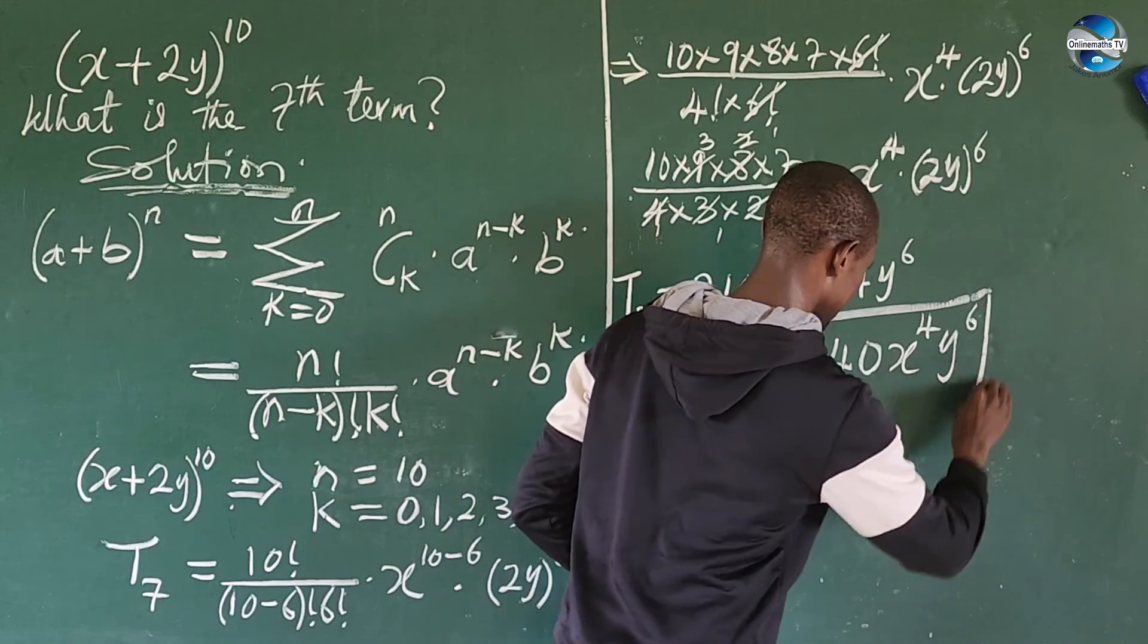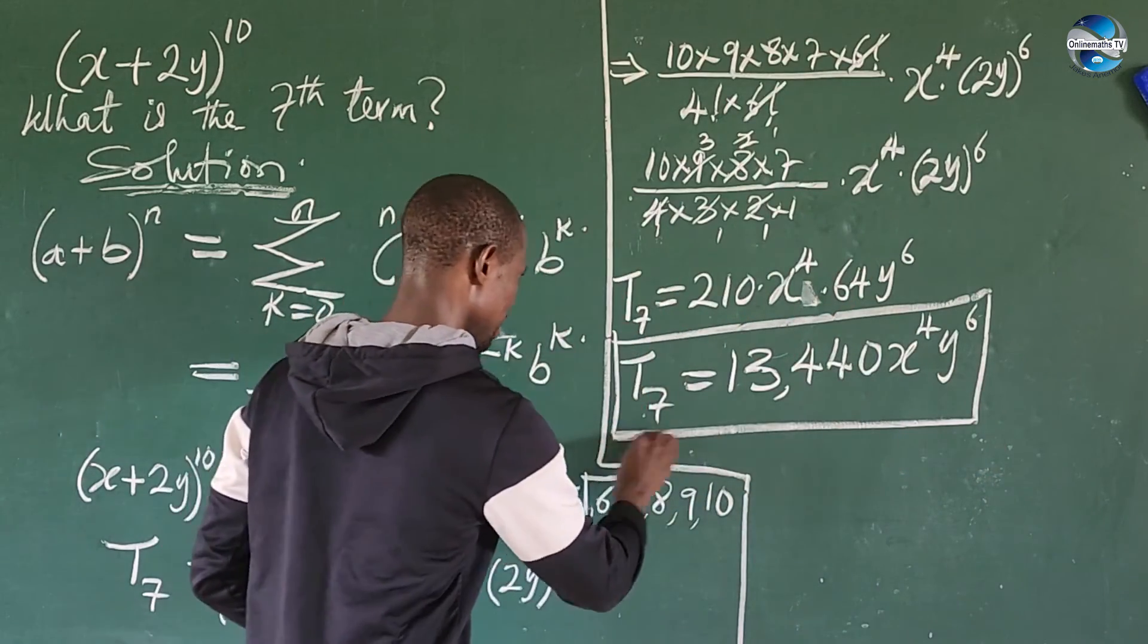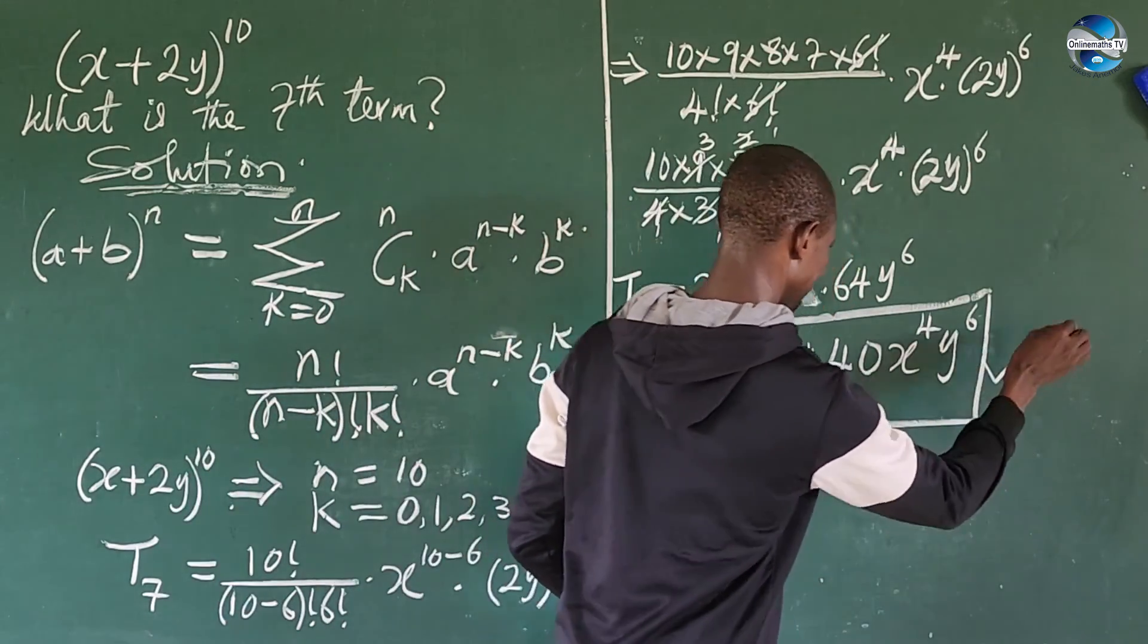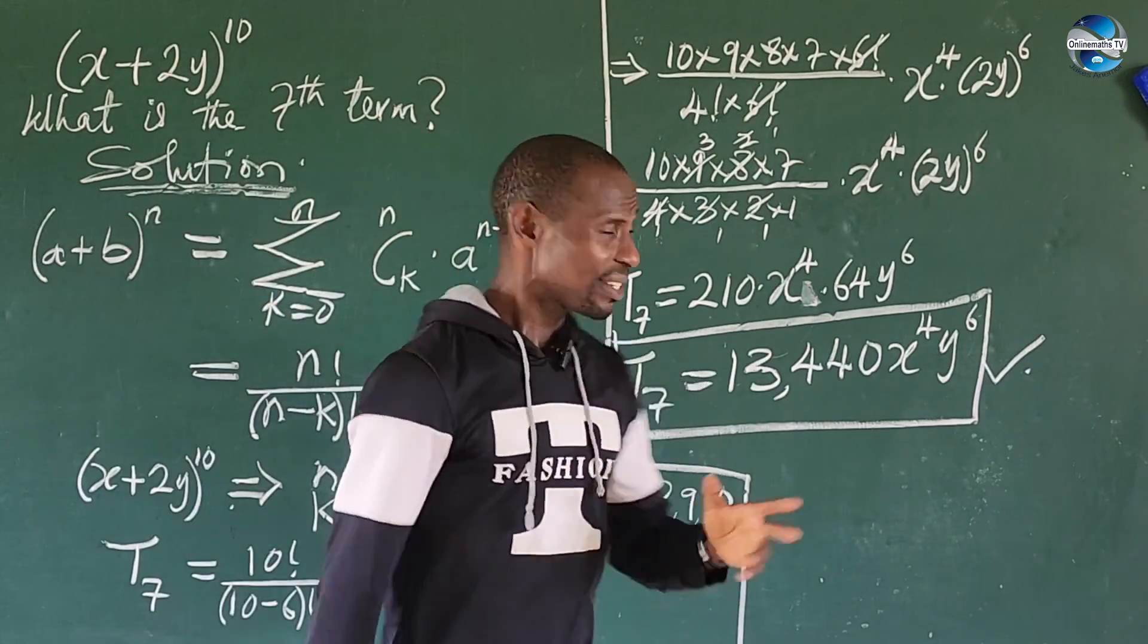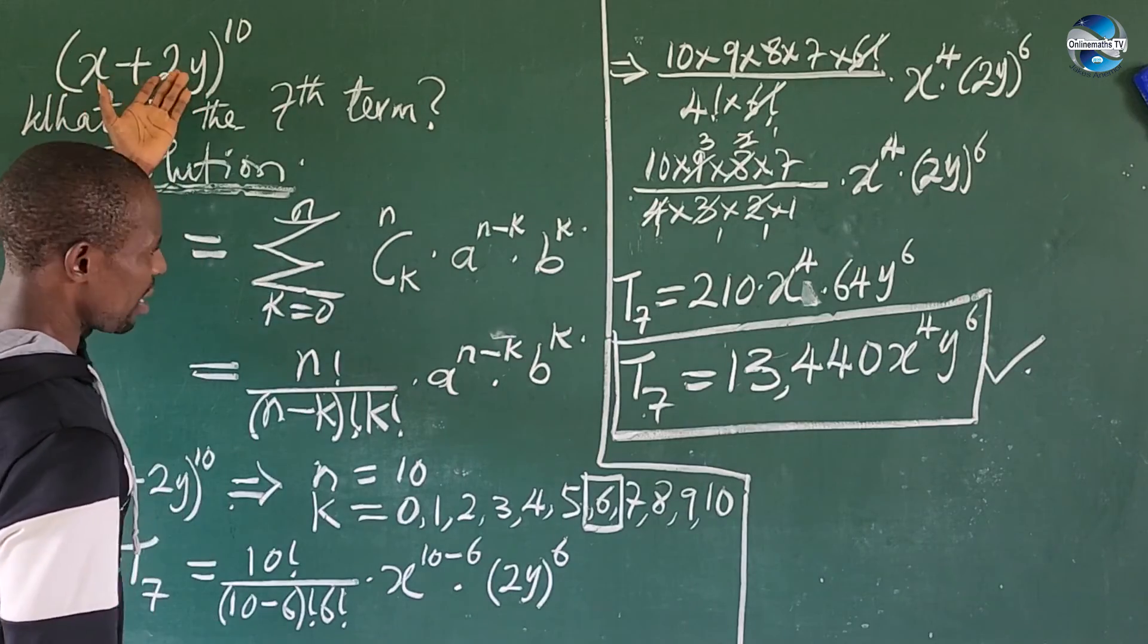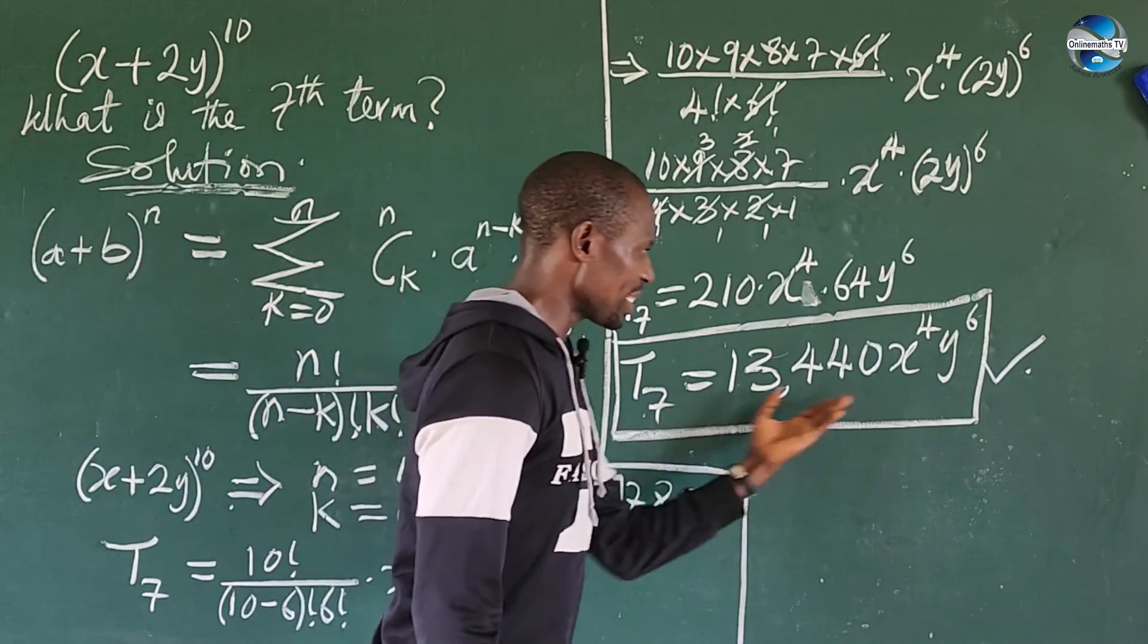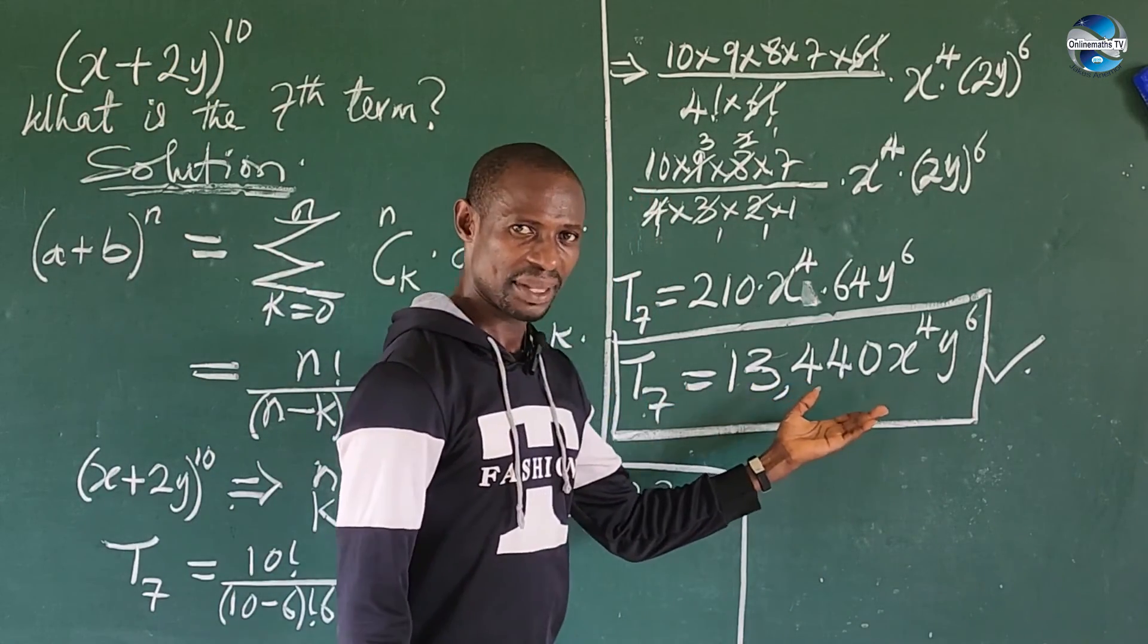So we have 13,440, then our T7 here, we have x^4, then y^6. Alright, so this is our T7. Okay. Alright, so from this expansion, we have to expand this. Yeah, this is our seventh term.